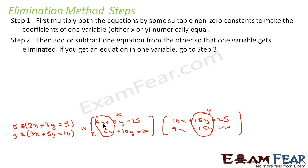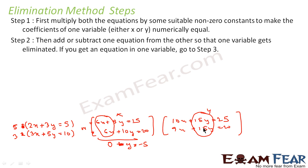For example, with 6x in both equations, if we subtract them, 6x minus 6x becomes 0. So we subtract the two equations: 0 plus 9y minus 10y gives minus y, and 15 minus 20 gives minus 5. So minus y equals minus 5.